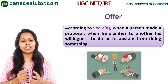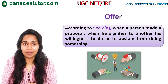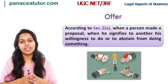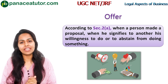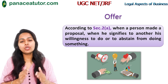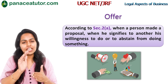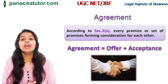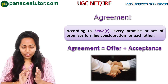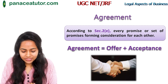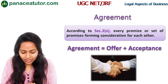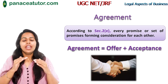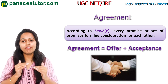According to Section 2(a), when a person makes a proposal — when he signifies to another his willingness to do or abstain from doing something — that is an offer. For example, you go to a shopkeeper and say you want a Maggi packet and give him 10 rupees. He takes your 10 rupees and gives you the packet. That exchange involves offer and acceptance. Your willingness to purchase something is known as an offer.